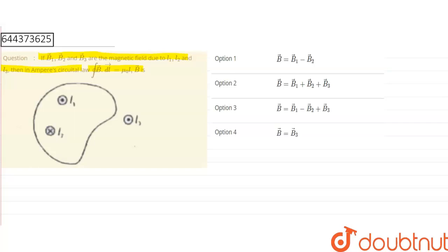We can see that i1, i2, and i3 are the three currents. It's a closed loop, a closed circuit in the presence of the magnetic field. B1 vector, B2 vector, and B3 vector are the separate magnetic fields due to the separate currents i1, i2, and i3.